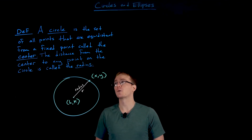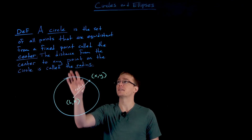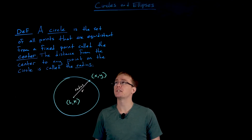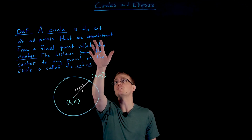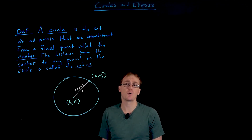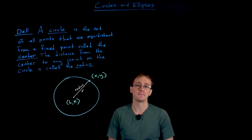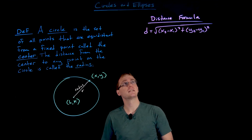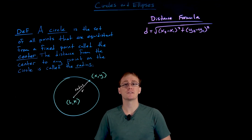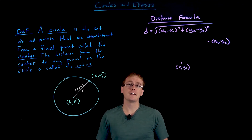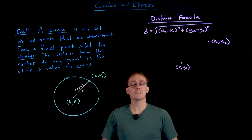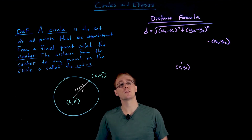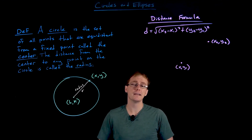To help us do that, we're going to need to use the distance formula, because in our geometric definition we are told that the circle is the set of all points that are of an equal distance from that fixed point called the center. The distance formula gives us the distance between any two points in our plane.